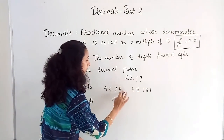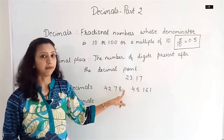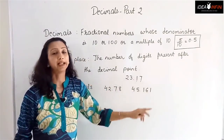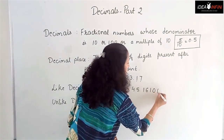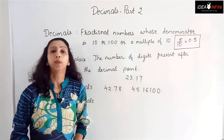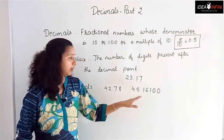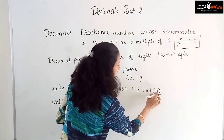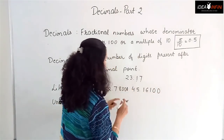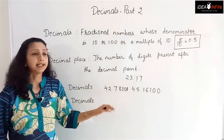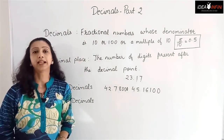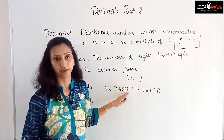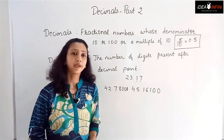If I remove this zero, they become unlike again. Zero doesn't have a value at the end of a decimal. Any number of zeros can be placed after the last numeric digit to make two decimal numbers into like decimals. This is how we make unlike decimals into like decimals — by putting the required number of zeros after the last numeric digit.